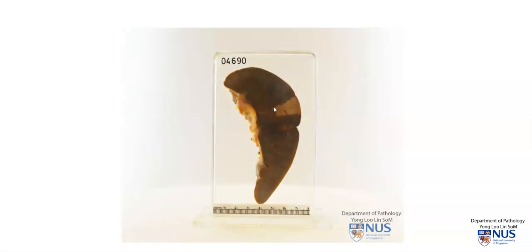There is a wedge-shaped area of pale tan discoloration with the broad base of the wedge at the capsular surface. This is an example of a splenic infarct.